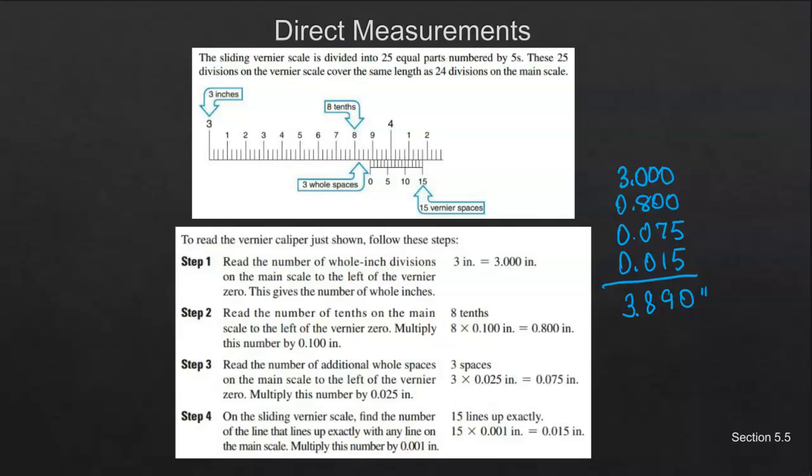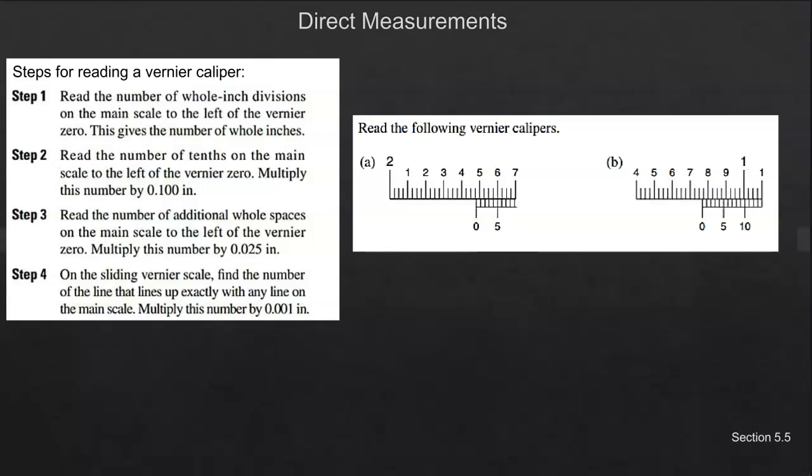So hopefully you will pick this up pretty quickly if you're understanding the micrometers. And I put the steps here again so that you'll be sure when you're trying to work these out on how to get there. All right, so we are at two inches, so 2.000. And then that's four tenths, right? That's the last number before we get to where it's lined up here at the zero. So four times 0.1.